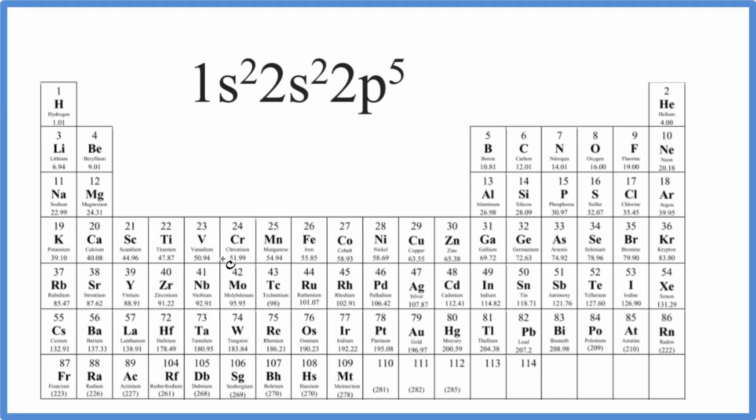In this video, we'll find the element on the periodic table that corresponds to the electron configuration 1s²2s²2p⁵. So there are two ways we could do this.